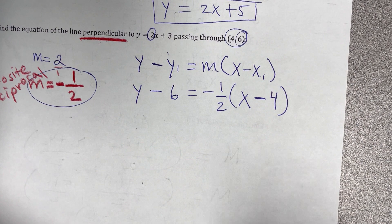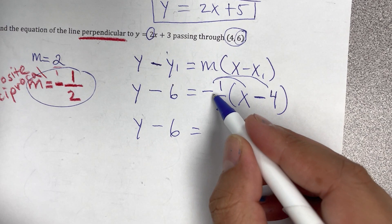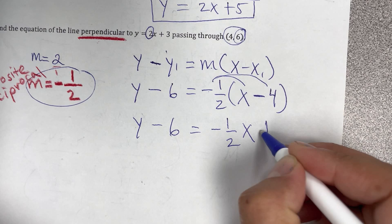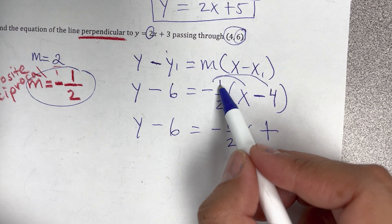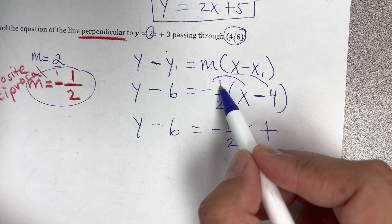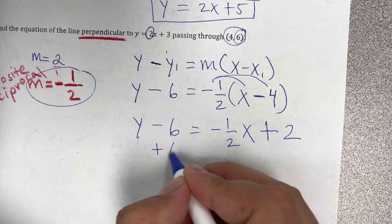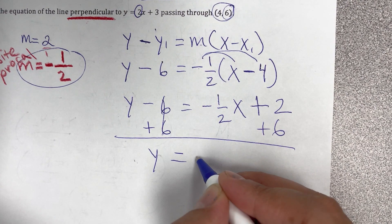Ya hacemos distributive property. Y minus 6 is negative 1 half times x is negative one half x. Negative times negative is positive. Recuerden que cuando hay un entero, when there is a whole number, multiply times the numerator, divide by that denominator. So 4 times 1, 4. Divided by 2, it's 2. We cancel by adding 6. And the answer is y is equals to negative one half x plus 8.